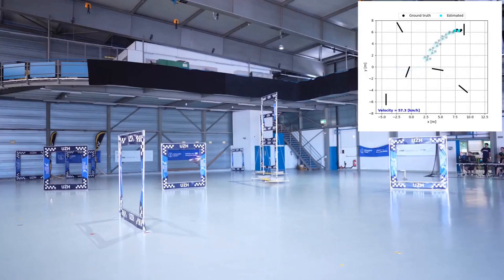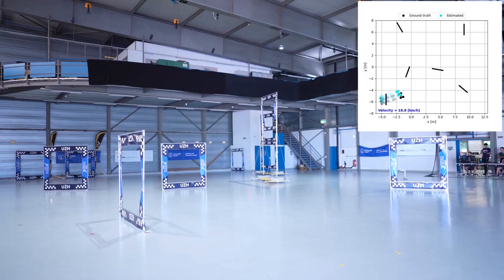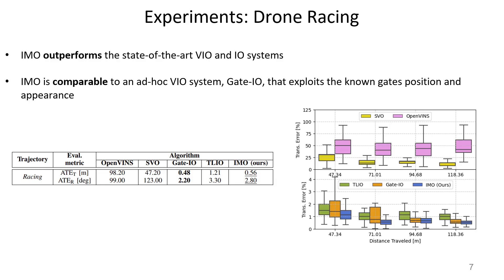In this video, we show a quadrotor flying on a racing track. In the top right corner, we see the trajectory estimated by our method compared to the ground truth. Our system outperforms the state-of-the-art VIO and inertial odometry systems in estimating the state of a racing drone, and it is comparable to an ad-hoc VIO system that uses a camera to localize to the gates and has access to the gate positions in the track.